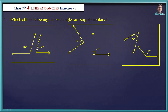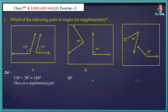So here is 110 degrees and 70 degrees. 110 plus 70 becomes 180, so these are supplementary pairs. The second figure: 90 and 90 degrees are given. So 90 plus 90 becomes 180 degrees — these are supplementary pairs.